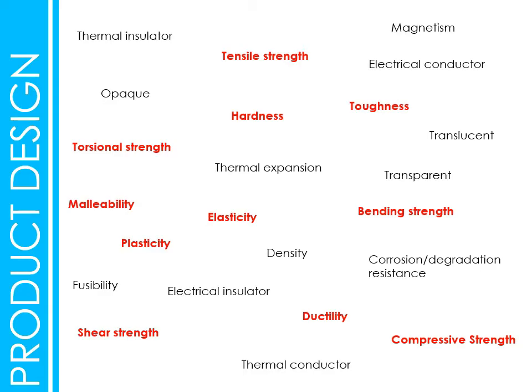Malleability is to do with a material's ability to be hammered and pressed into a shape. Things like copper, mild steel, and low carbon steel have good malleability. Gold and silver too — they can be hammered and shaped into flattened materials or shapes.